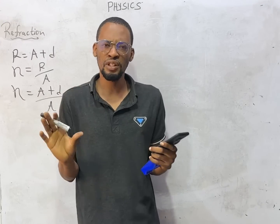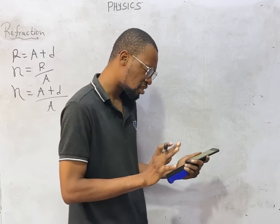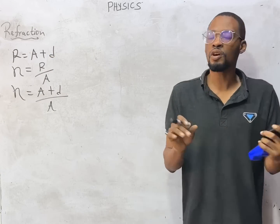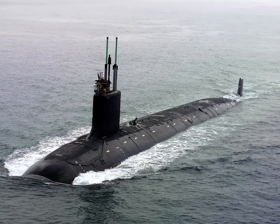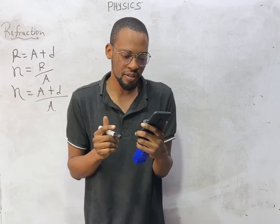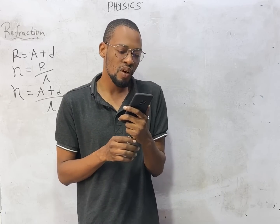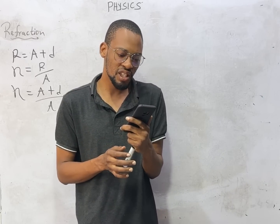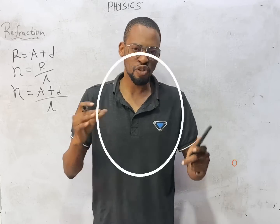Now look at this next question carefully. A submarine — a watercraft, a structure in water — is observed to rise from a real depth of 80 meters to 60 meters in water. So we have two real depths in this problem.